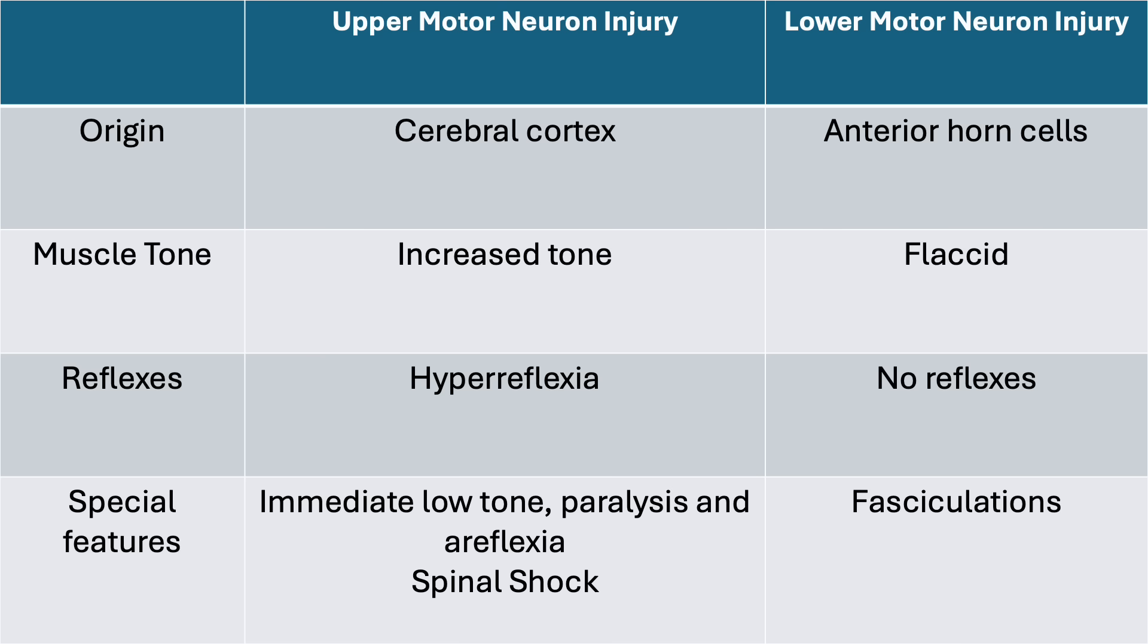And then there are some special features. When you have an acute upper motor neuron injury, immediately you get low-tone paralysis and areflexia. This is called spinal shock. Ultimately, it will manifest with the symptoms of hyperreflexia and hypertonicity that I spoke of earlier. But not immediately. A special feature of the lower motor neuron injury is fasciculations. Those weird little twitches that come when the desperate muscles get a little bit of acetylcholine.